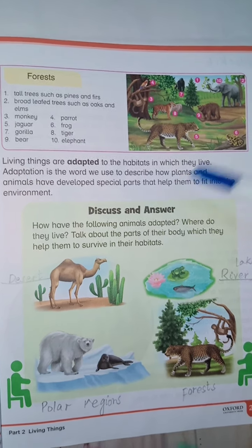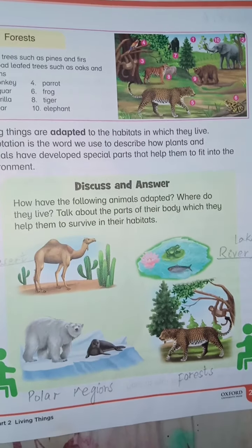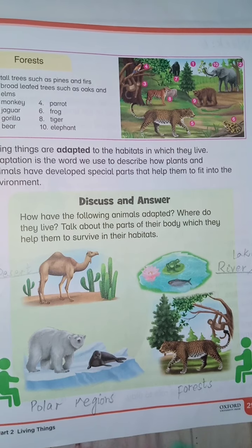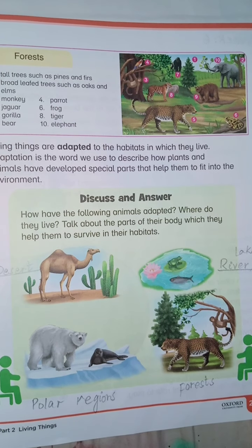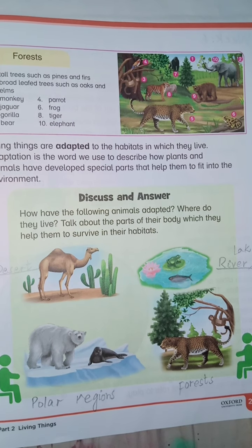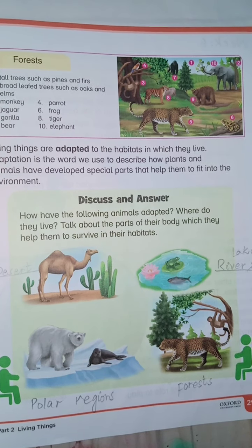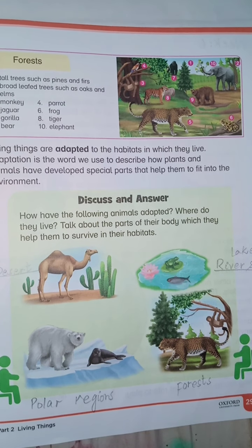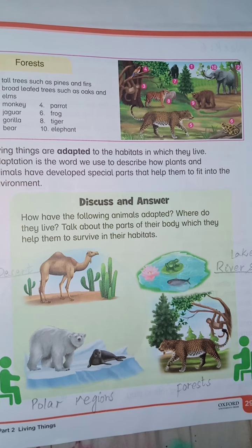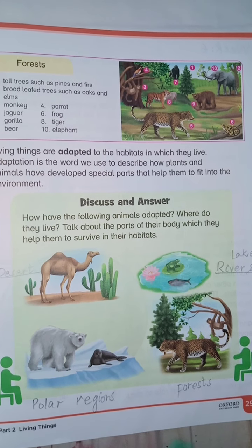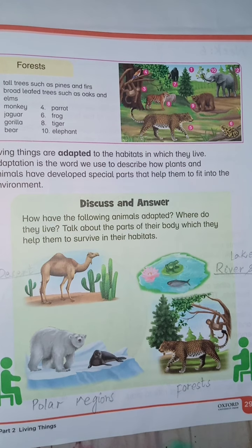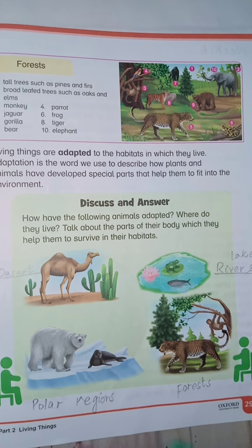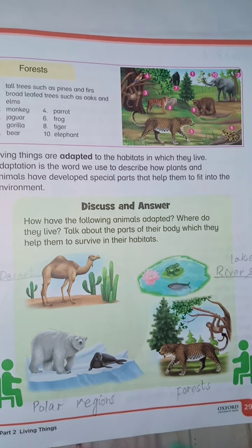So today we read about habitat — where animals and plants live is called habitat. For your home task, make a list of polar region, desert, sea, river, lakes, and forests.